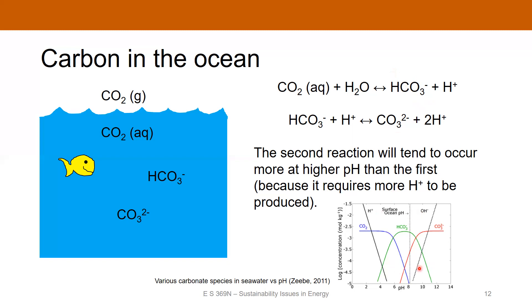This diagram shows roughly what pH levels correspond to the presence of each dissolved species. The x-axis is pH, and the y-axis is the logarithm of aqueous concentration in moles per kilogram. For pHs above about nine, you're basically entirely with the carbonate ion. For intermediate pHs around eight and slightly lower, bicarbonate is favored. At very acidic pHs, the CO2 will not dissociate or react with water — it'll just remain as CO2. The H+ concentration varies linearly with pH on the log scale, as does OH−.